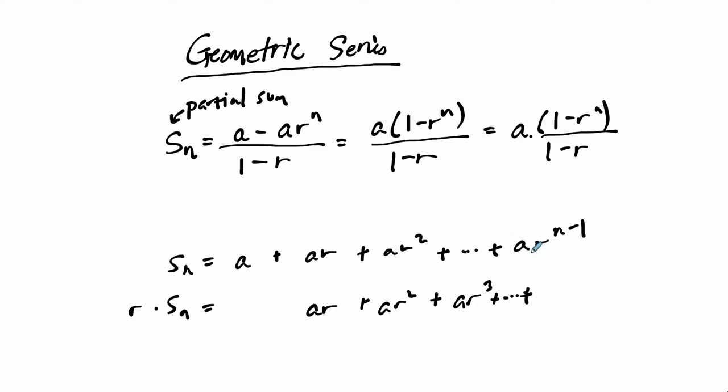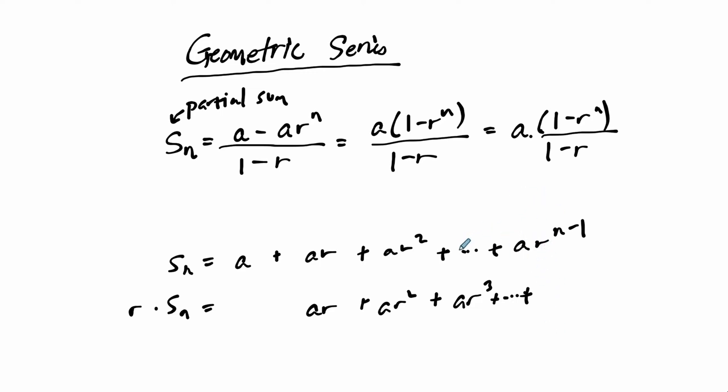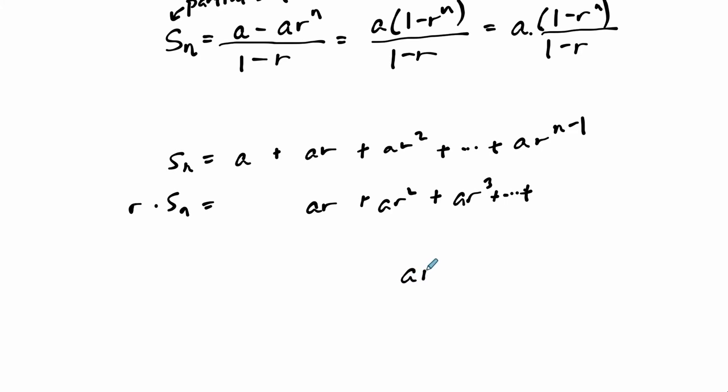If we think about what we're going to get there, if you had ar to the n minus 2, one step before this, times r, well r to the first times r to the n minus 2, you add these exponents, 1 plus n minus 2, so 1 plus n minus 2 equals n minus 1. There's going to be some term here that's a times r to the n minus 1.